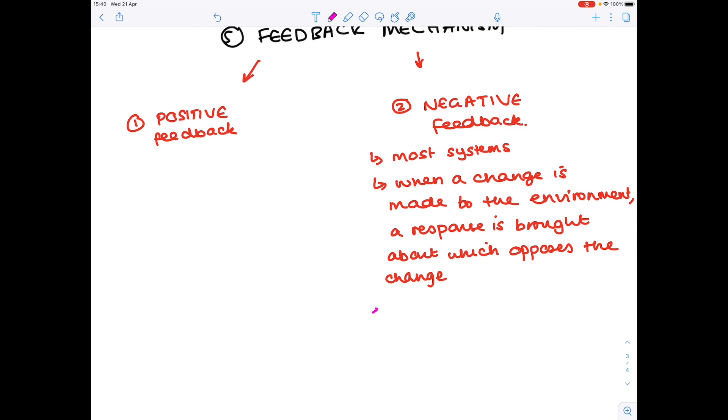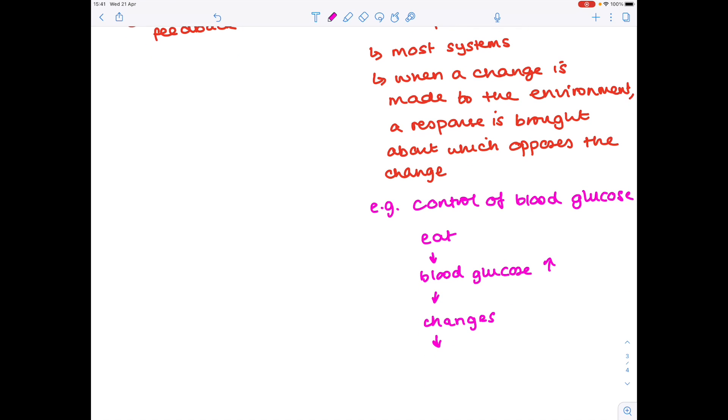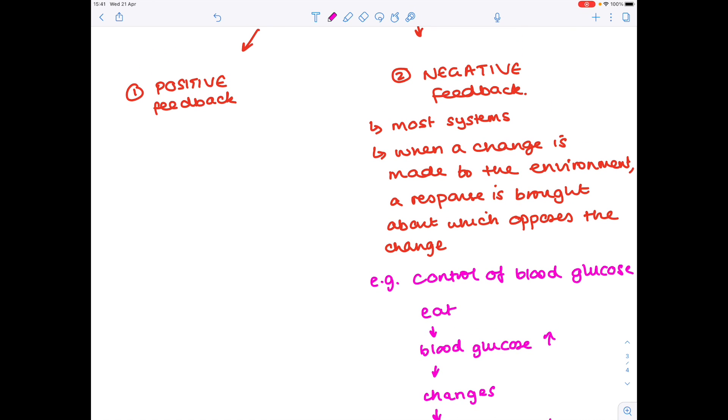Now a key example of negative feedback is the control of blood glucose. So for example you eat, blood glucose levels rise, changes occur within the body which lead to a decrease in blood glucose. And that therefore is an example of negative feedback. And I'll talk about that in a lot more detail in another video.